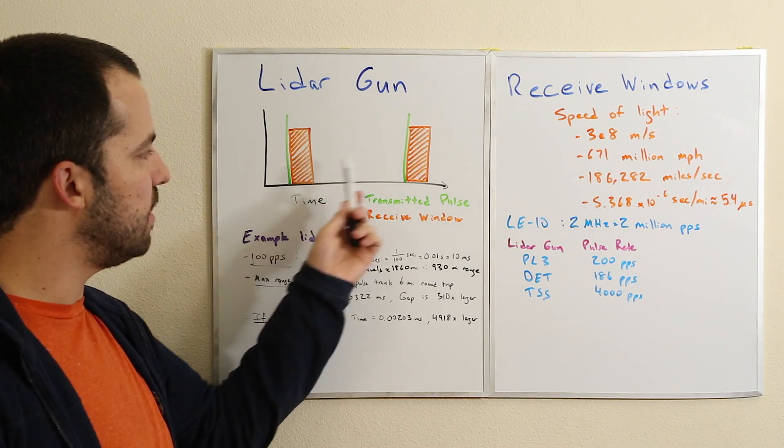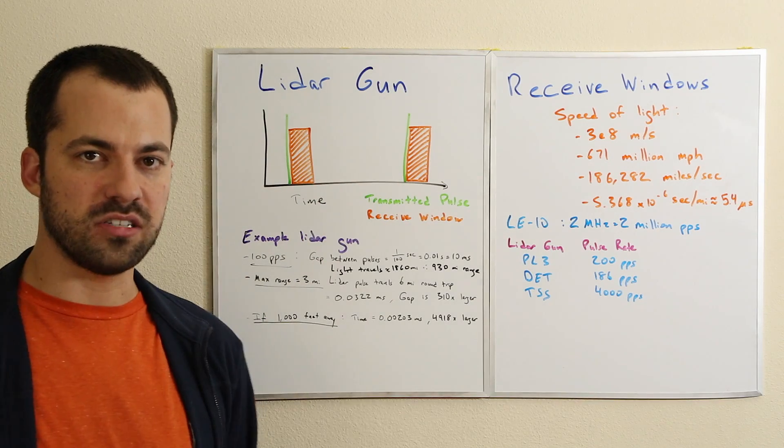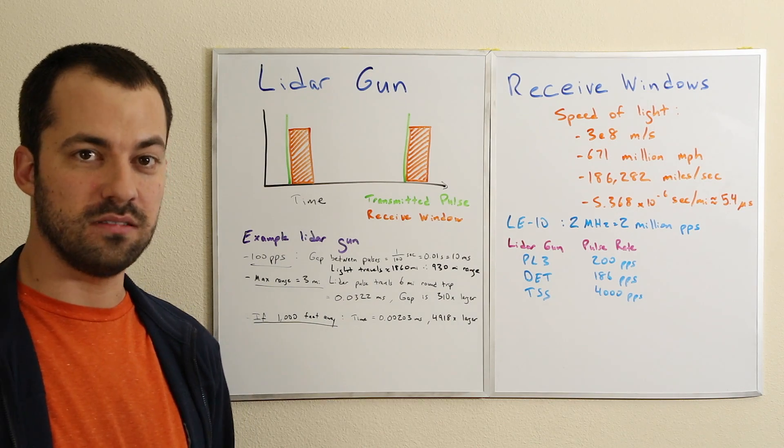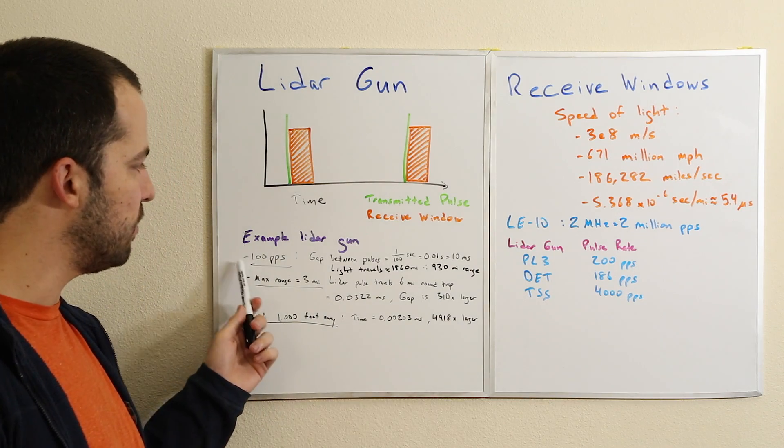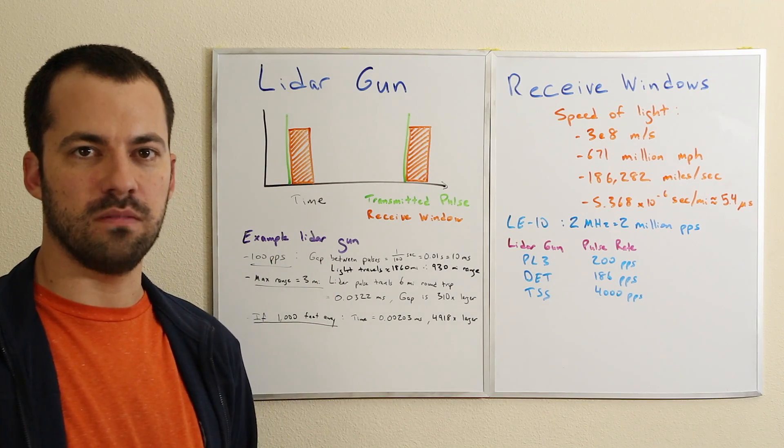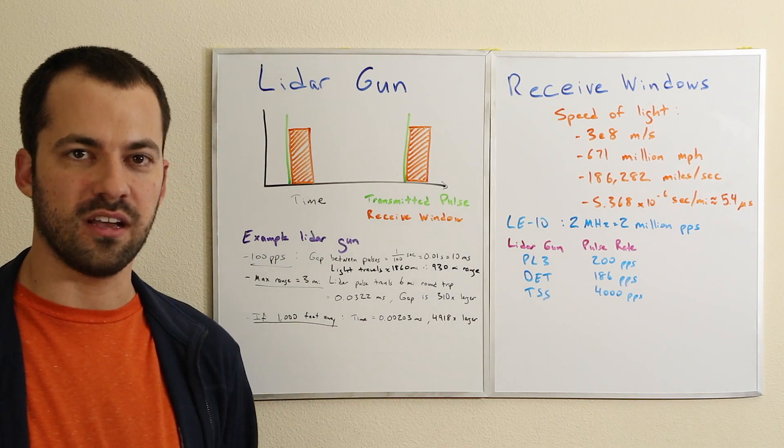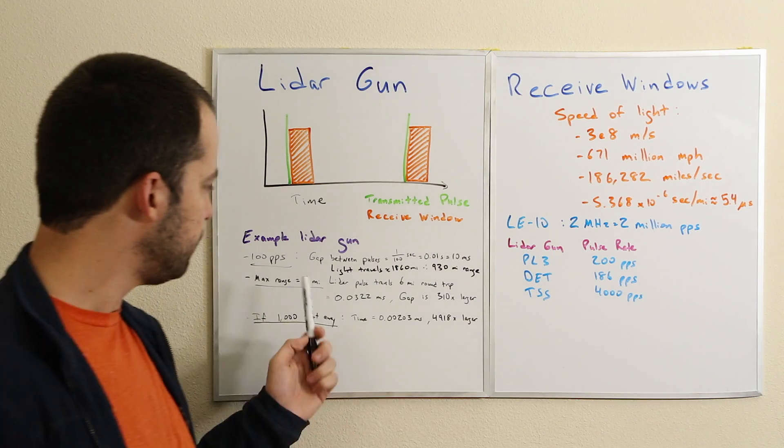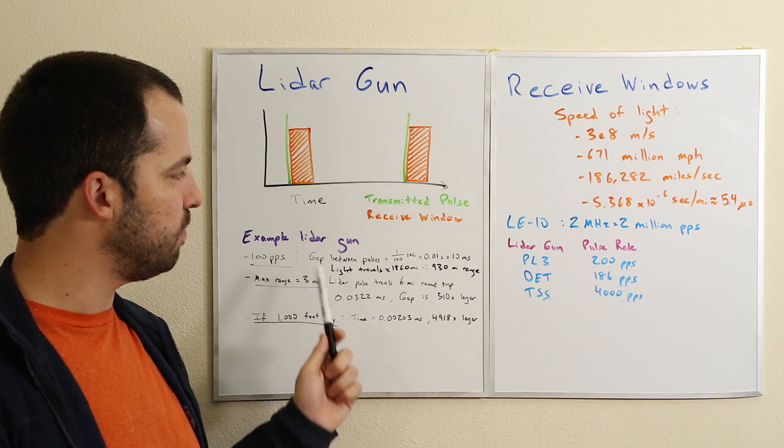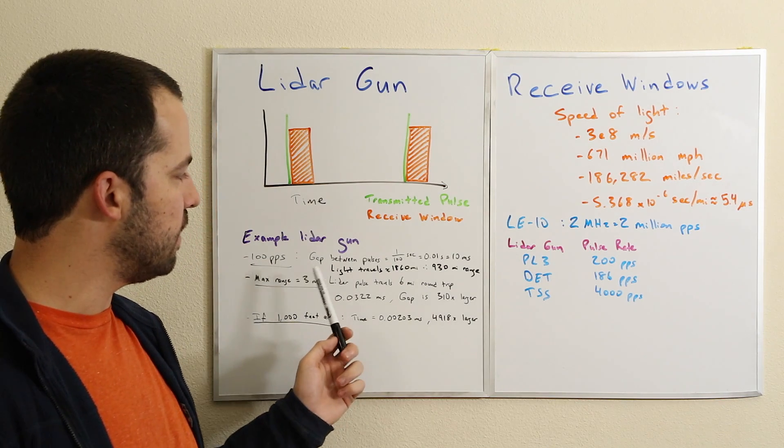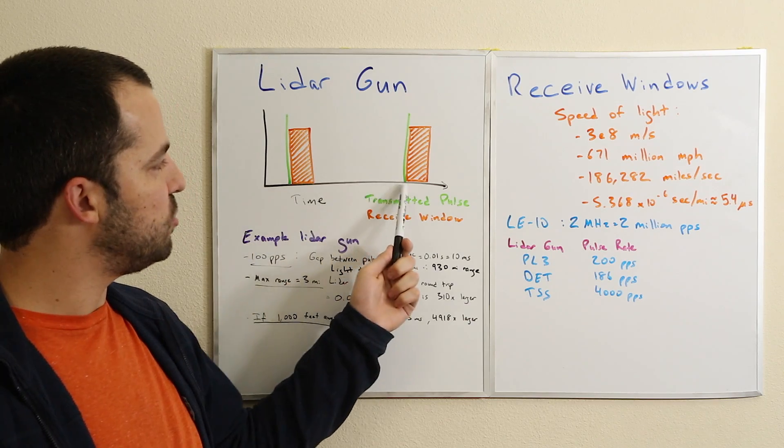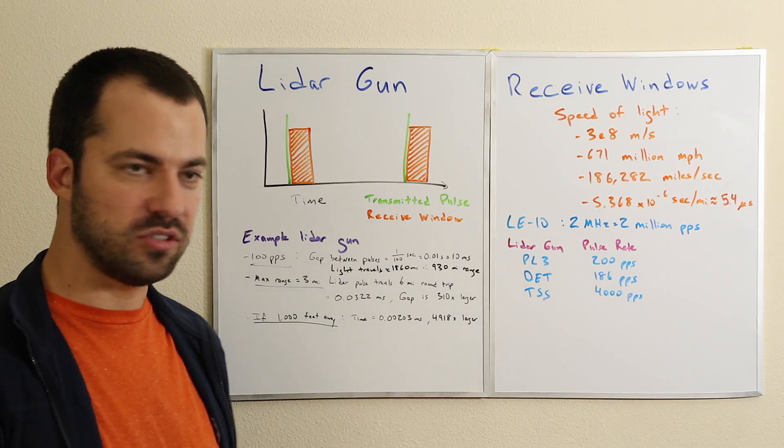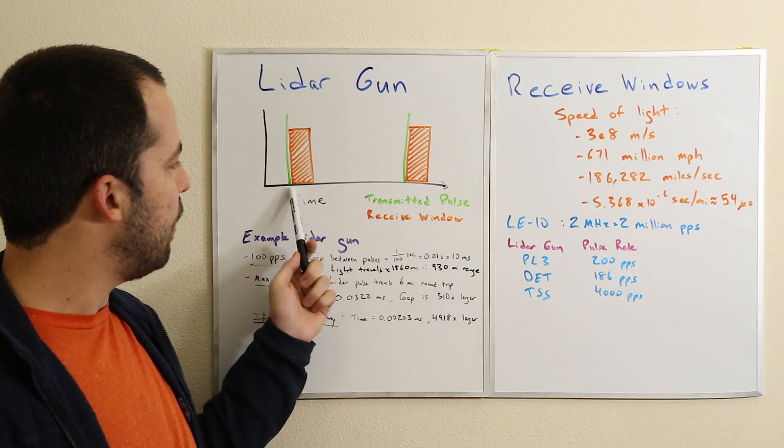Why doesn't the lidar gun look for a pulse the entire time? If we look at the speed of light and do some quick math, it's actually really simple to understand. Let's say our example gun transmits at 100 pulses per second - many of them do, it's a little bit slow but it'll make the math easy. That means the gap between pulses is 1/100th of a second, which is 10 milliseconds.